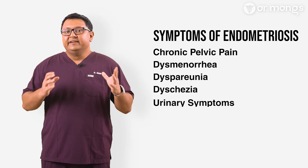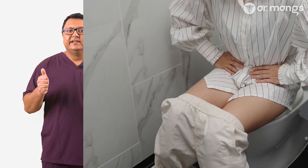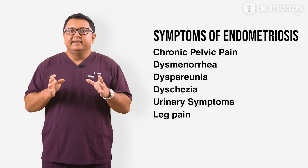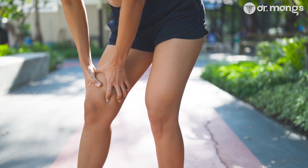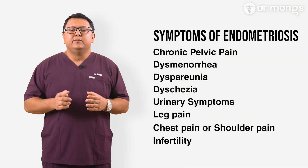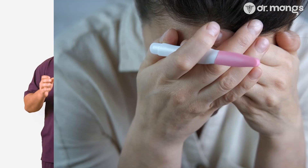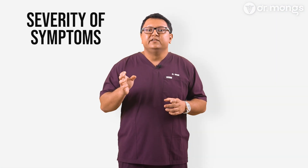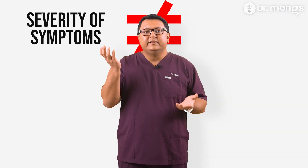Urinary symptoms such as painful urination, frequency, urgency, or difficulty emptying the bladder may also occur. Leg pain such as sciatic pain or pudendal pain can occur when endometriosis affects the pelvic nerves. Chest pain or shoulder pain can result from diaphragm endometriosis. Infertility is also a concern — endometriosis is one of the leading causes of infertility, affecting about 30 to 50 percent of women with this condition. It is important to note that the severity of symptoms does not always correlate with the extent of the disease.